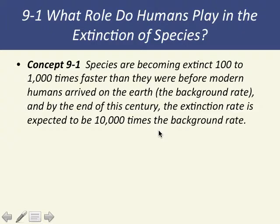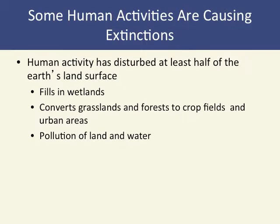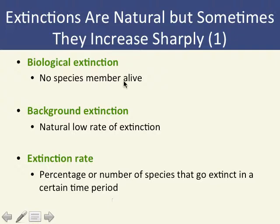Section one is about the role humans play in the extinction of animals. There are three different kinds of extinction: local, ecological, and biological. Biological extinction means the species is completely gone — extinct is forever. Background extinction is the normal rate of extinction that occurs naturally. We have to understand that extinction is a natural process; the question is whether it is happening at an accelerated rate due to human activities.